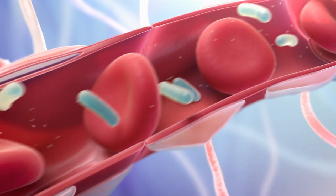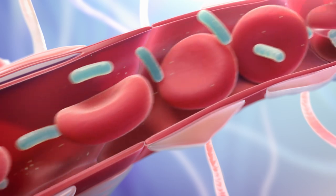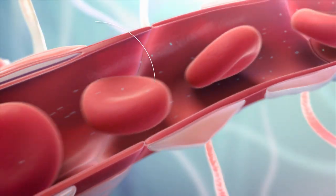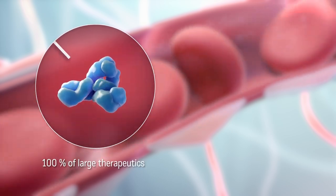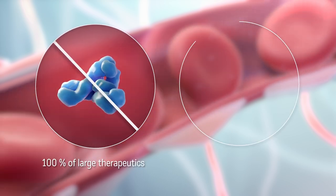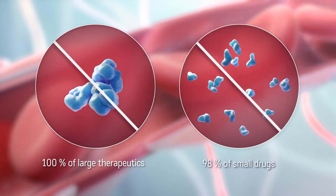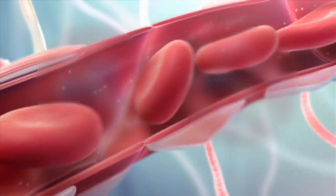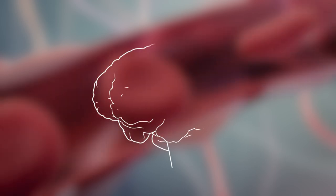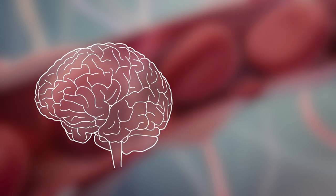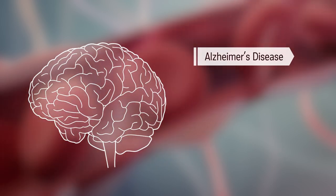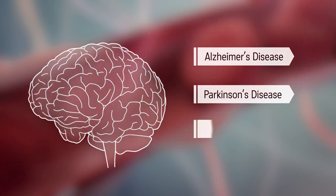While the blood-brain barrier is effective at stopping the entry of harmful agents, it also prevents 100% of large therapeutics and 98% of small drugs from entering the brain after being delivered into the blood. This is a major obstacle to the treatment of brain disorders such as Alzheimer's disease, Parkinson's disease, and brain tumors.